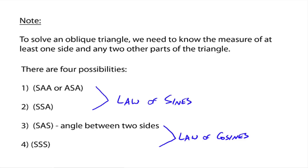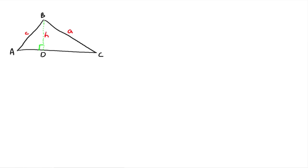So let's go on to the derivation of the law of sines. We have an oblique triangle with the three angles labeled capital A, capital B, and capital C. Because it's not a right triangle, we throw in the height h of the triangle, making a 90-degree angle, and call that point D. This separates the triangle into two right triangles. We label the sides with lowercase letters: the side opposite angle A is little a, opposite angle C is little c, and opposite angle B is little b.